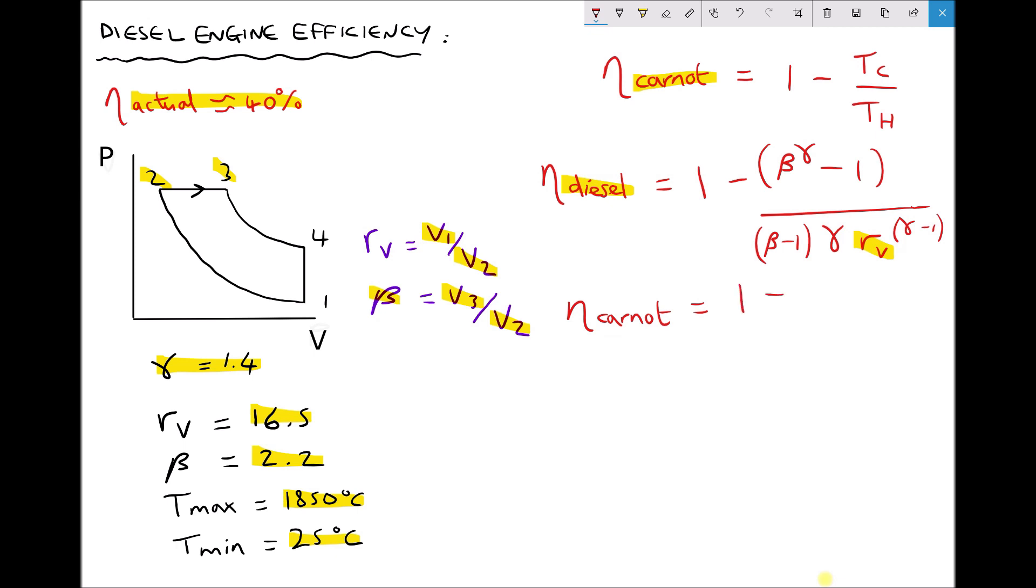So we have 1 minus T cold. T cold is 25 degrees C but to convert that to Kelvin we need to add 273.15 Kelvin.